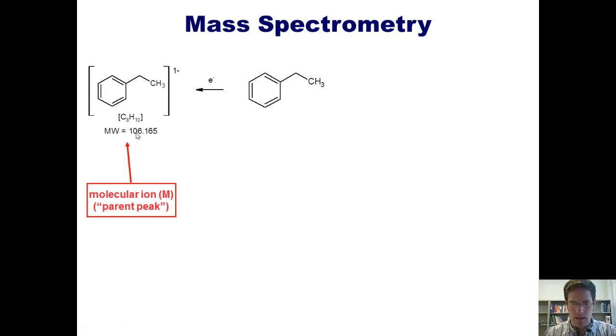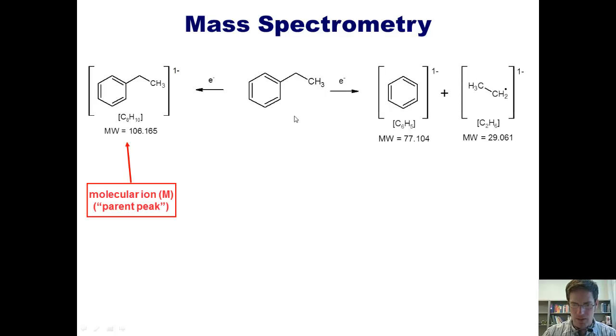In contrast, upon electron bombardment, some of the ethyl benzene molecules might get dissected into these two fragments, whose individual molecular weights are shown. Our mass spectrum would therefore give one peak at 77 and another peak at 25, in addition to the parent ion peak of 106.